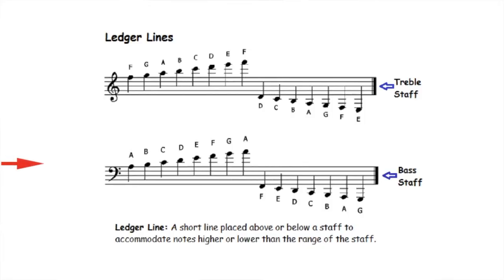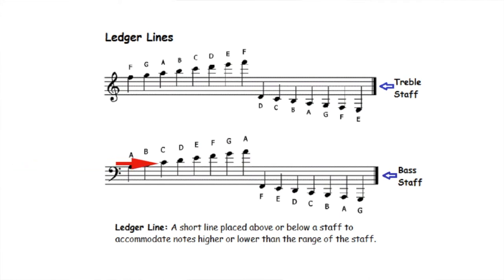The bass staff also has ledger lines. The first ledger line above the bass staff is called middle C, as you can see on the screen.